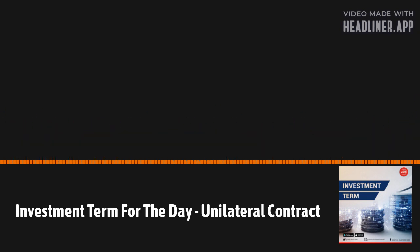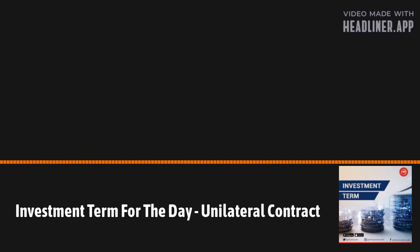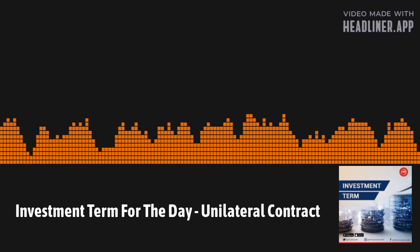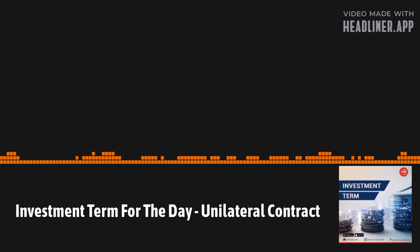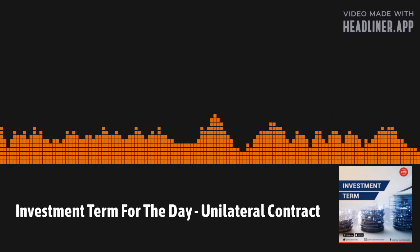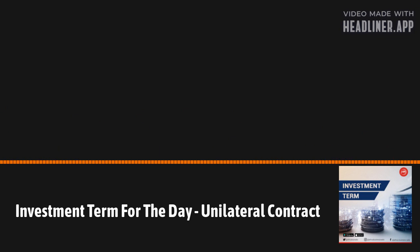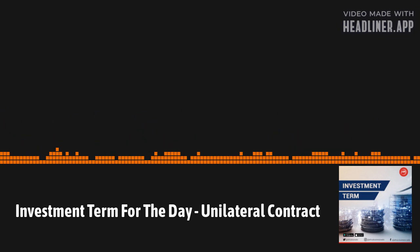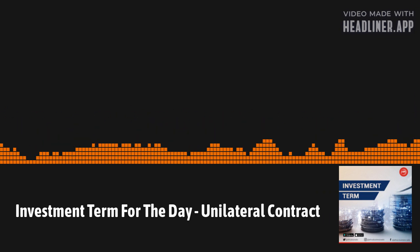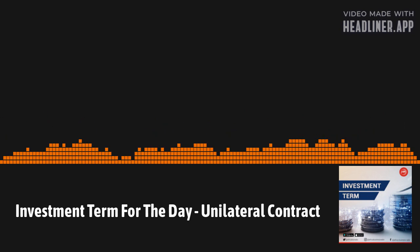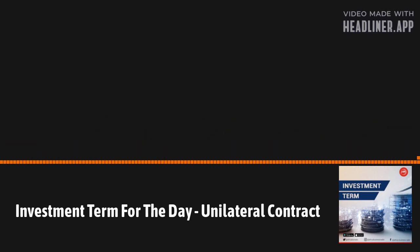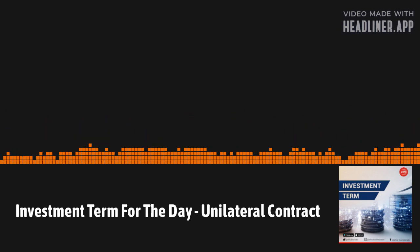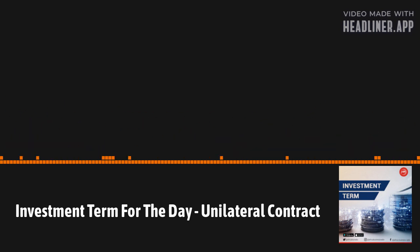In a unilateral contract, the offerer is the only party with a contractual obligation. The offerer promises to pay for specified acts that can be open request, random, or optional for other parties involved. Unilateral contracts are considered enforceable by contract law. However, legal issues typically do not arise until the offerer claims to be eligible for remuneration tied to acts or currencies.